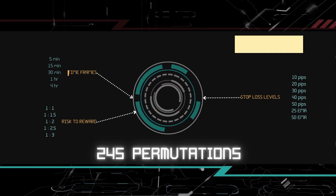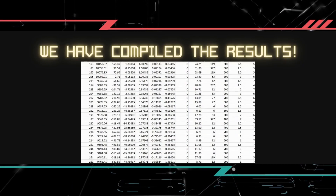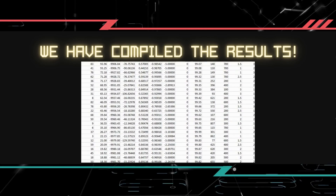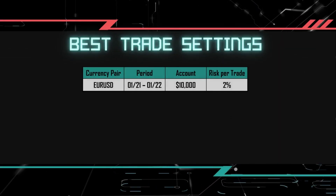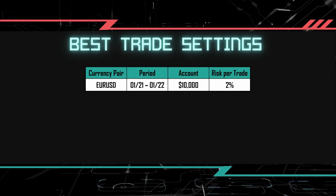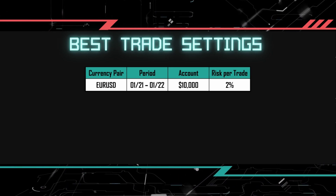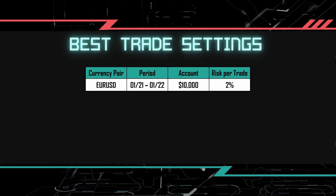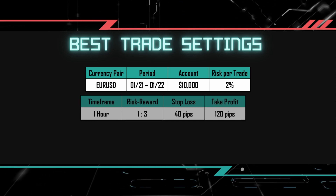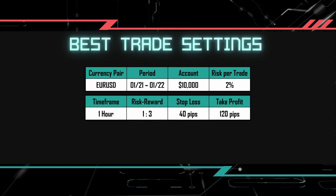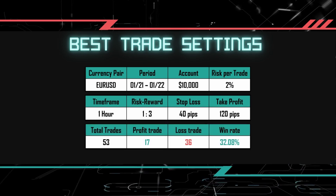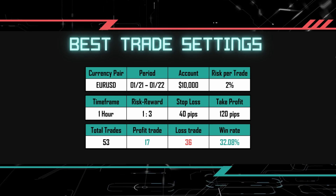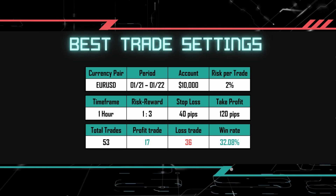After running the expert advisor for some time, we have collected a total of 245 different results based on each setting permutation. We backtested EURUSD using the tick data from 2021 January to 2022 January. We started with an account of $10,000 and risked 2% of the account for each trade. Out of the 245 different settings, the one that gave the best result had a total of 53 trades executed in 2021: 17 winning trades and 36 losing trades, with an overall win rate of 32.08%.